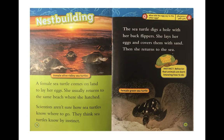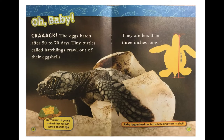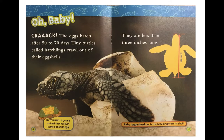Pause your video and read that riddle. Oh baby! Eggs hatch after 50 to 70 days. Tiny turtles called hatchlings crawl out of their egg shells — they are less than three inches long. Turtle term: a 'hatchling' is a young animal that has just come out of its egg. The caption says 'baby loggerhead sea turtle hatching from its shell' — that's right, it describes what's going on in the picture.